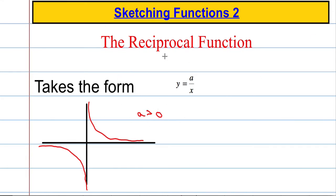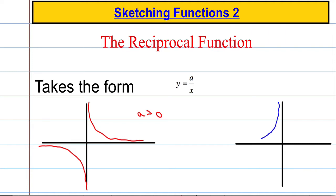So that's when A is bigger than zero. When A is less than zero, we ended up with a function that came down in this direction and curved around, getting closer and closer to the x-axis but never ever touching it. And we had the mirror image where it gets closer and closer to the y-axis but never ever touches it, curves around and then approaches the x-axis but again will never ever touch it.